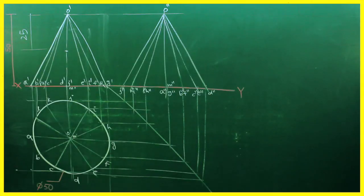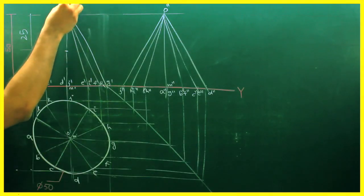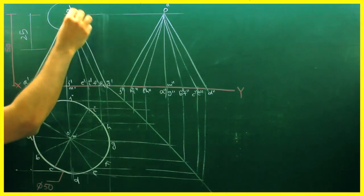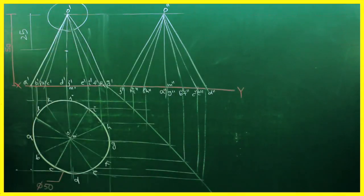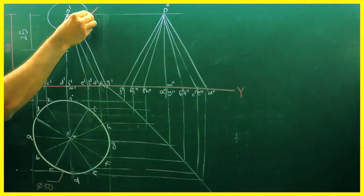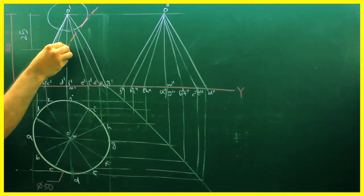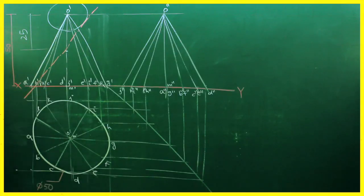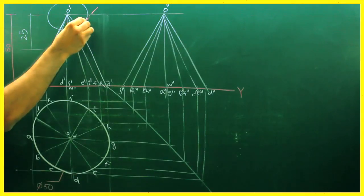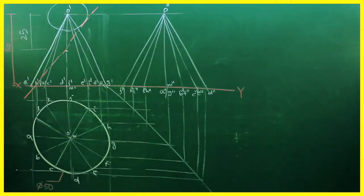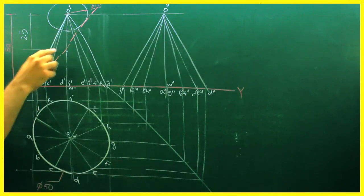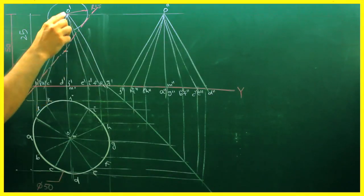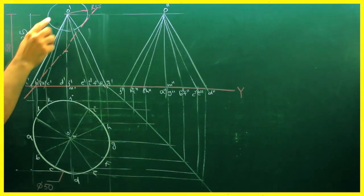So what we will do? From O' we will draw a circle of 15 mm and then we will draw a cutting plane tangent to this circle, which is 15 mm away from the apex, so it is bisecting the axis of the cone. This much portion will be cut.